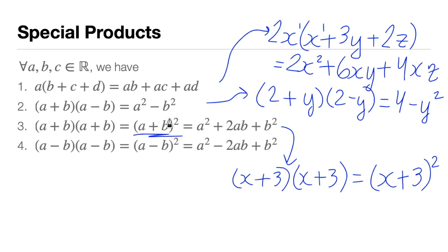To expand, we follow the pattern: a² + 2ab + b². This becomes x² (squaring the first term), plus 2 times x times 3, which gives 6x, plus the last term squared, which is 9. So we get x² + 6x + 9.